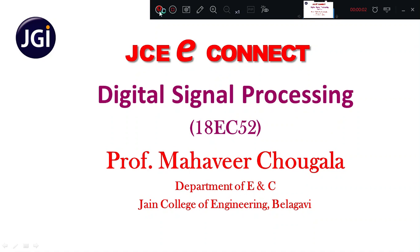Hello students, this is the continuation of the previous video lecture. In the previous video, I discussed the property of DFT which is the modulation property. In this property, we understand what is the DFT of two signals when they are multiplied. The DFT of the multiplication of two signals in time is equivalent to circular convolution of the same two sequences in the frequency domain, and that circular convolved sequence in DFT has to be scaled by 1 divided by N. Based on this property, we will see one example.